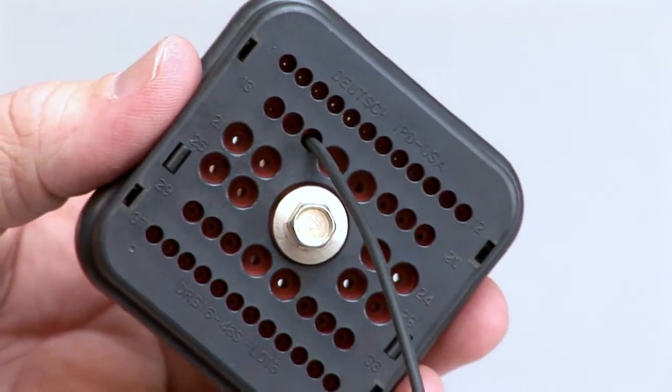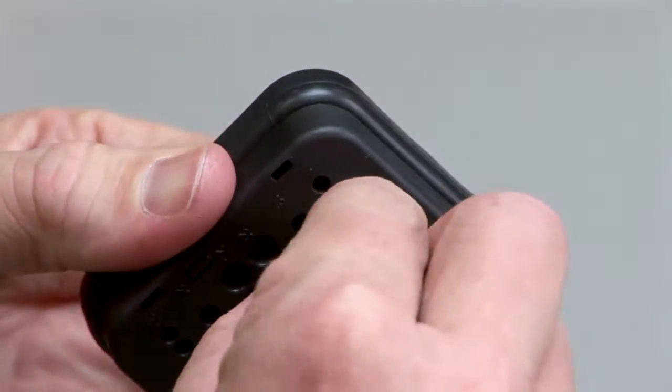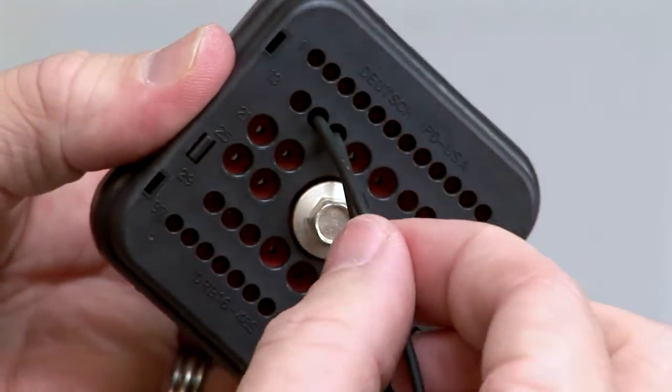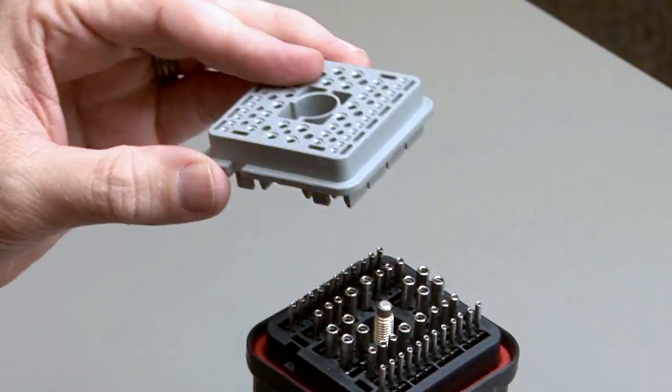Contacts should be fully inserted into the connector, with the locking fingers in place under the shoulder of the contact. Repeat this process until all of the cavities are filled. When populating a DRB series connector, secondary wedge locks are required.